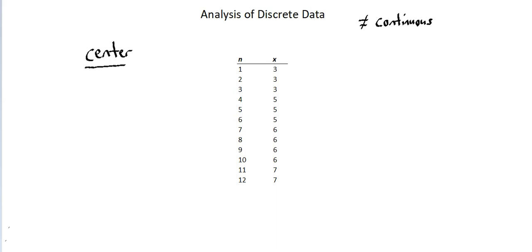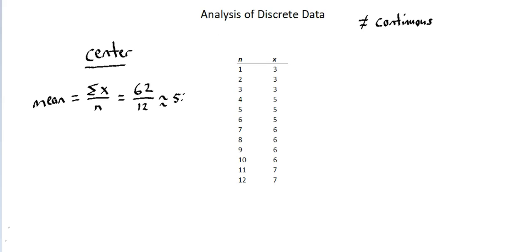First is mean, and mean is the same as average. The way we calculate the mean is we're going to sum all of our measurements — all of our x values — and divide by the number of data points collected. In our data set, if we sum the x values, we have a total of 62. So 3+3+3+5+5+5+6+6+6+6+7+7 equals 62. We divide by 12 data points and arrive at an approximate mean of 5.17.